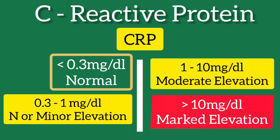Levels more than 50 mg per deciliter are considered severe elevation, which can be seen in acute bacterial infections.